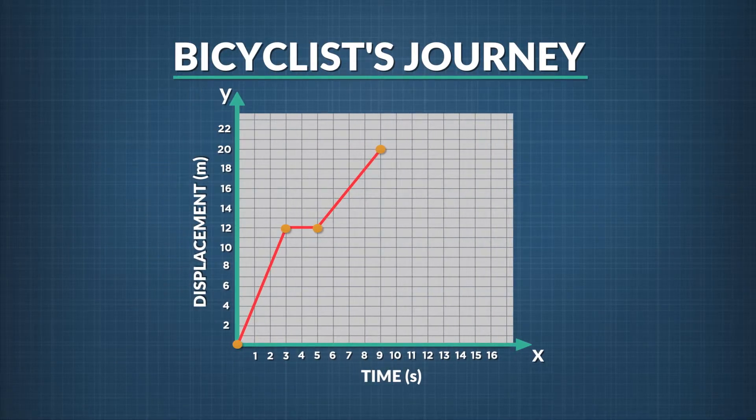Finally, we move with a negative velocity from 9 seconds until 12 seconds elapsed. A negative velocity means the slope of the line for this segment of the journey is negative. The cyclist has turned around and is headed back to the start point. A negative 3 meters per second curve from 9 to 12 seconds looks like this. We've now drawn each leg of the cyclist's journey on the displacement versus time graph.